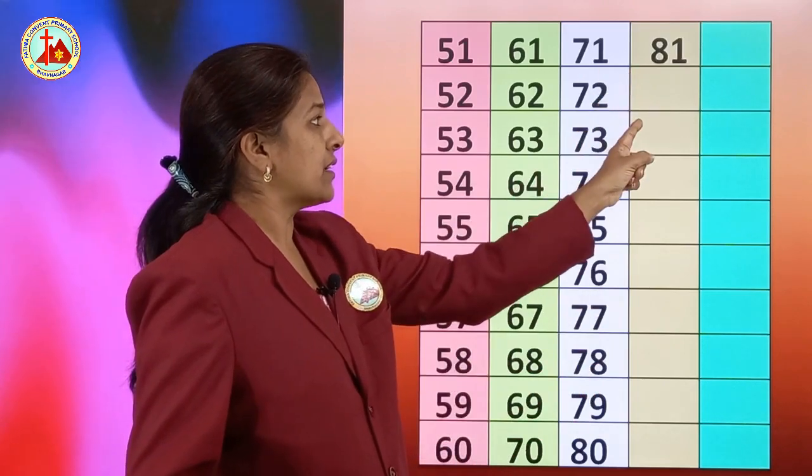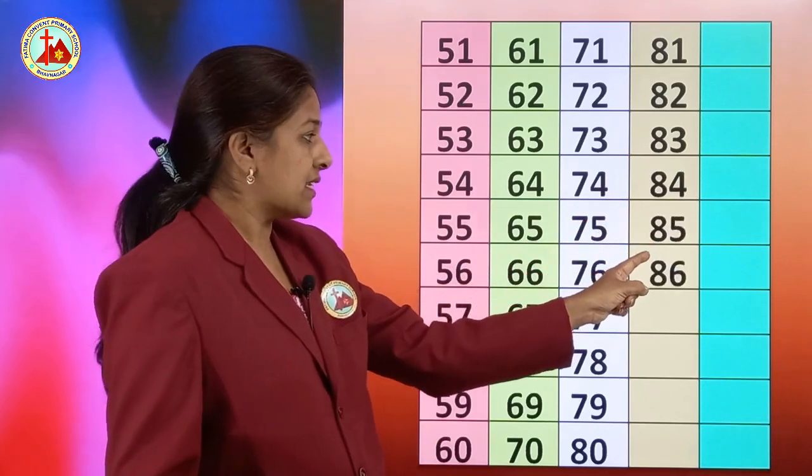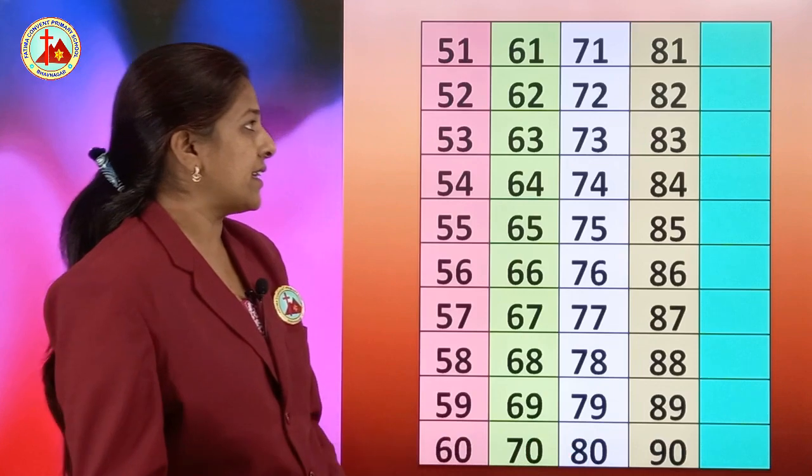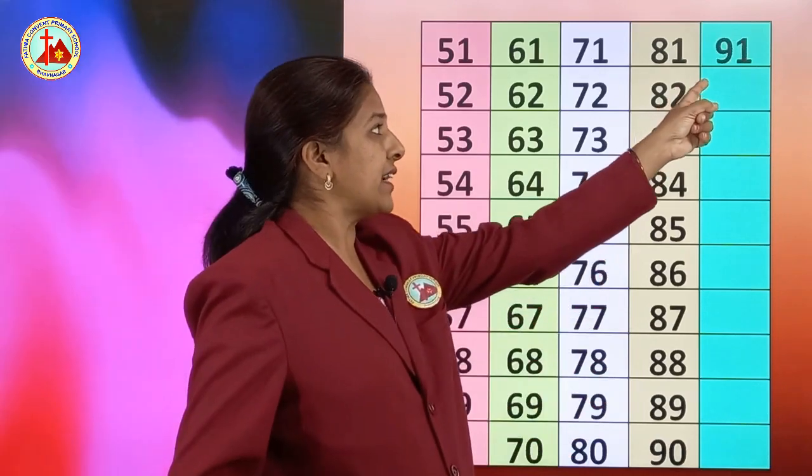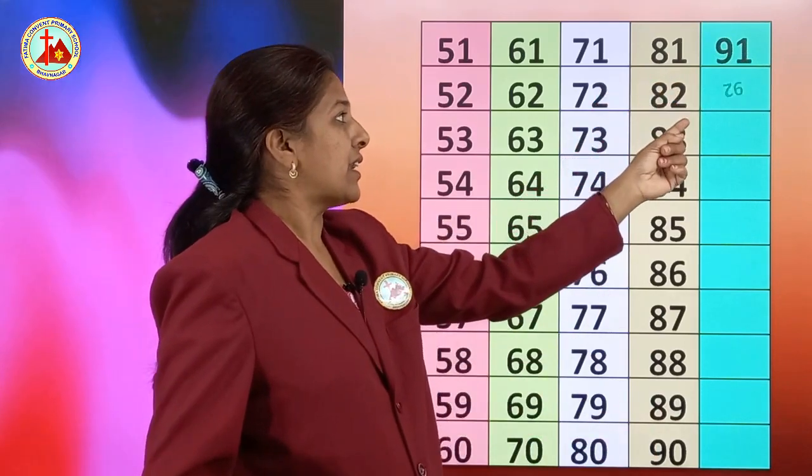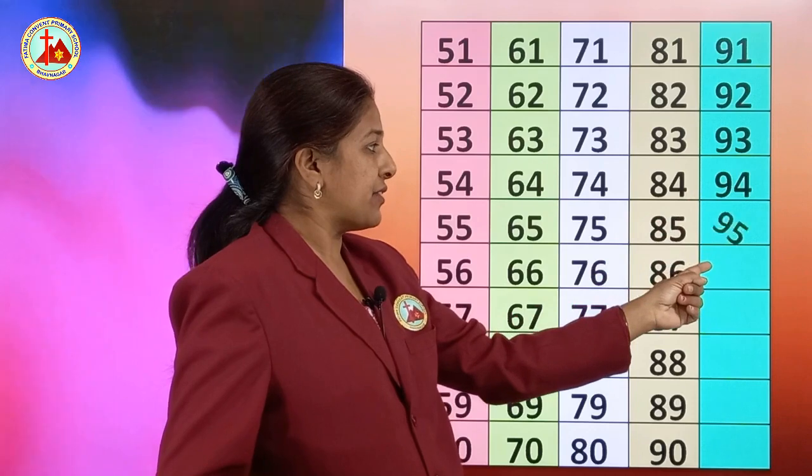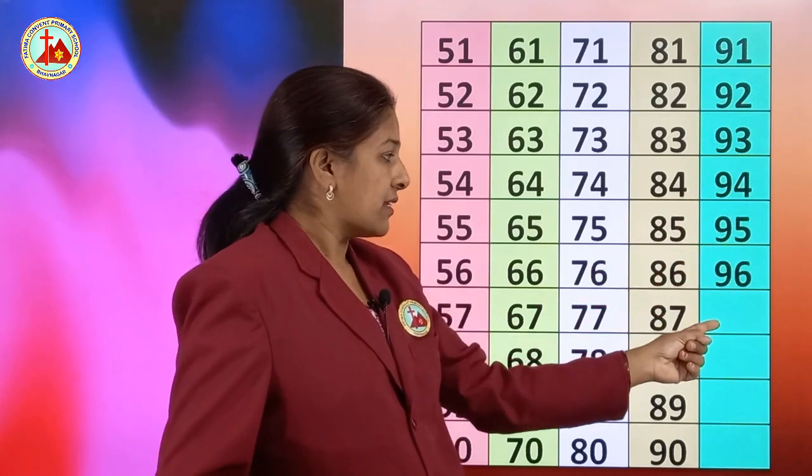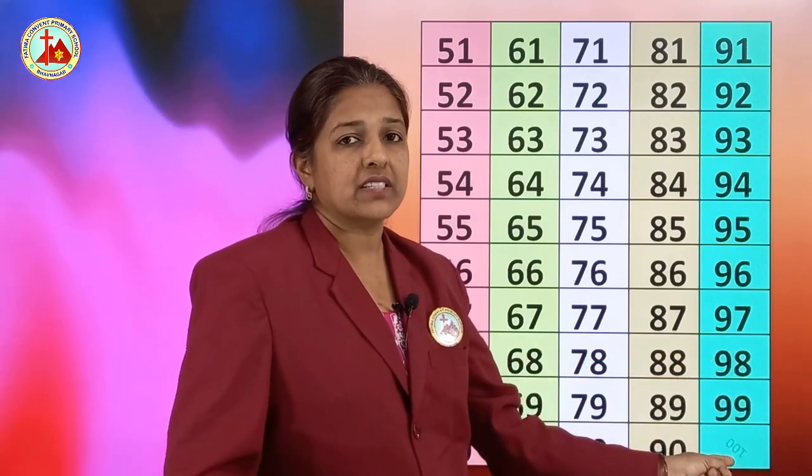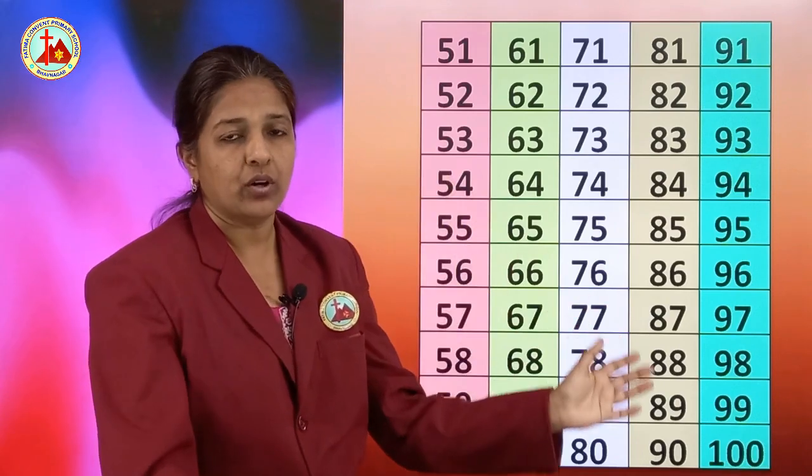After 80, 81, 82, 83, 84, 85, 86, 87, 88, 89 and 90. After 90, 91, 92, 93, 94, 95, 96, 97, 98, 99 and 100. 1 double 0, 100. These are numbers from 51 to 100.